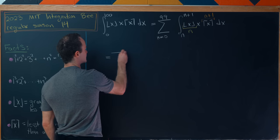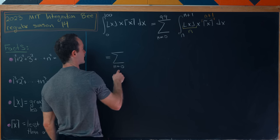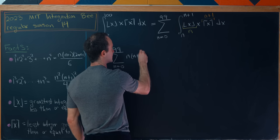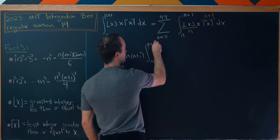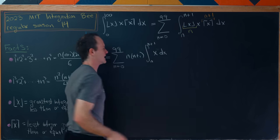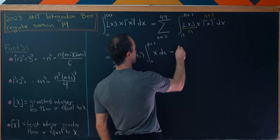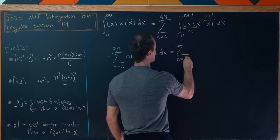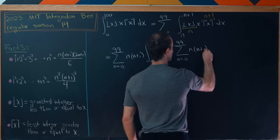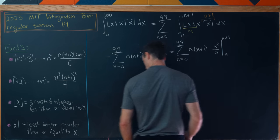So those are constants with respect to the integral so we can pull them out. We have the sum from 0 to 99 of n times n plus 1 times the integral from n to n plus 1 of x dx. Now that's a fairly easy integral to evaluate. We can take the antiderivative and plug in the endpoints. So we have that sum and then n times n plus 1 and then x squared over 2 evaluated from n to n plus 1.